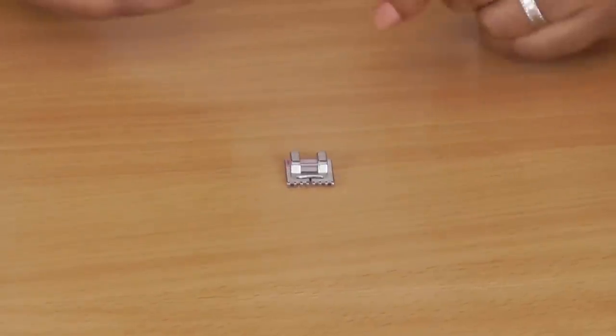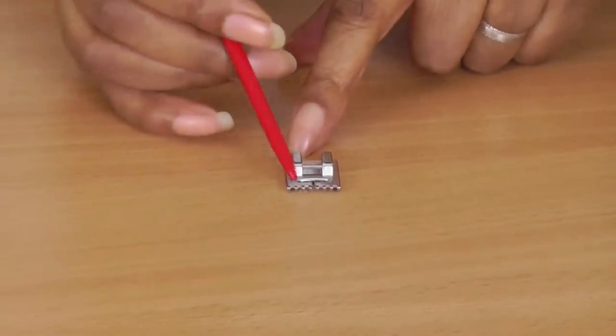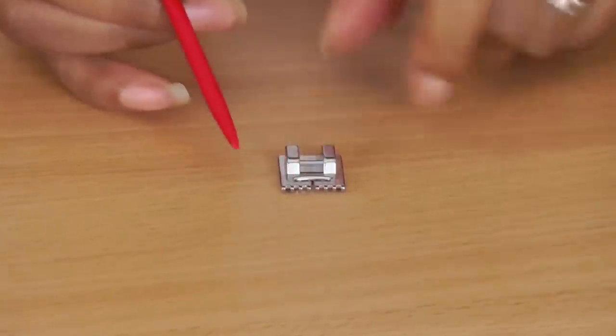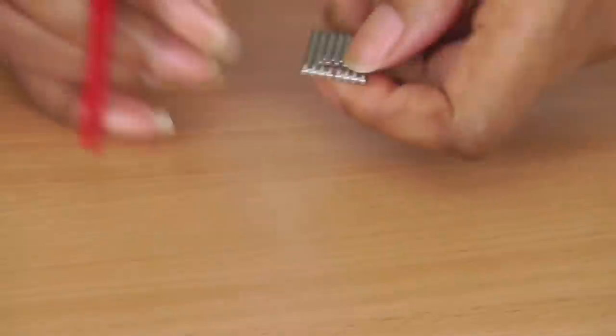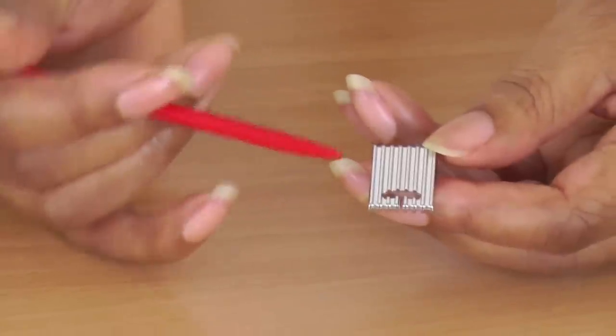This is what a pintuck foot looks like. It's short in comparison to your regular feet and it has small tucks to the front of it. Now if I just turn it to the underside you can see there are deep grooves and this is what creates the tucks.